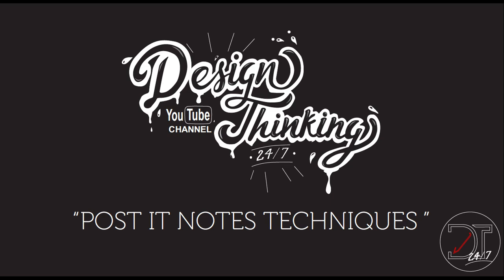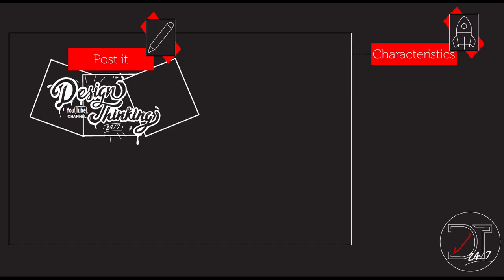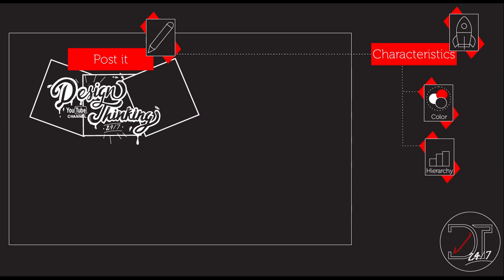When you start your development with the post-it technique, the first thing you need are post-its. You can get post-its of different colors. It's very important to have different categories, and those categories will be determined by the color based on the development that you are doing.